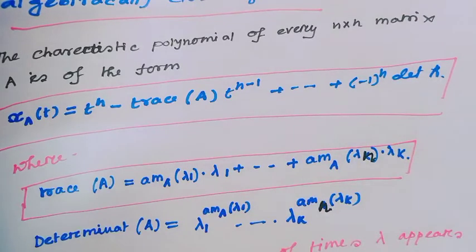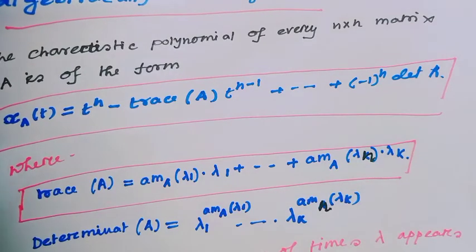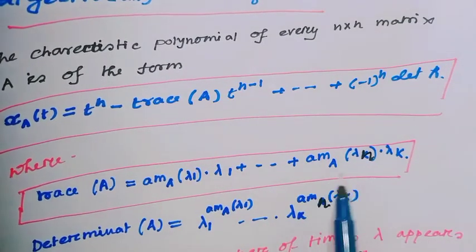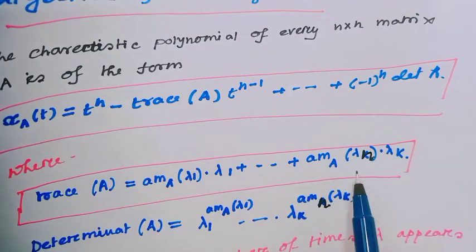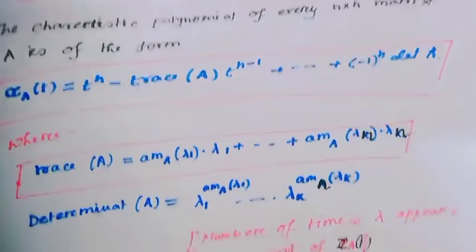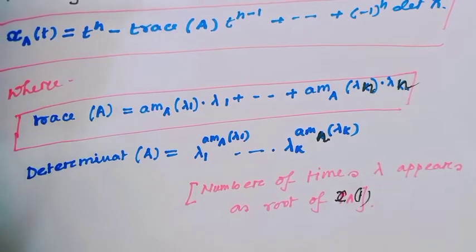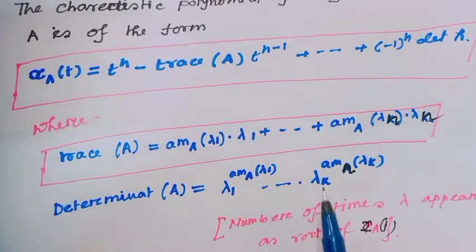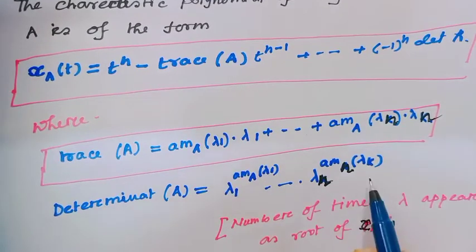What does trace of A mean? It is the sum of algebraic multiplicity of eigenvalue λ₁ times λ₁, continuing up to the n-th term: algebraic multiplicity of λₙ times λₙ. Algebraic multiplicity means the number of times λ appears as a root of the characteristic polynomial. The determinant of the matrix means λ₁^(m₁) × ⋯ × λₙ^(mₙ).